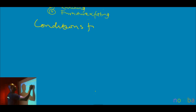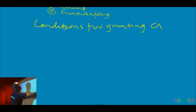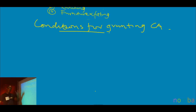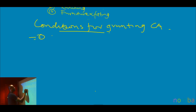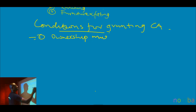Conditions for granting CA — let's take it now in detail. What are the conditions for granting capital allowance? One: ownership of the asset must not be in dispute. That is to say, the person applying for capital allowance must be the bona fide owner of the asset.